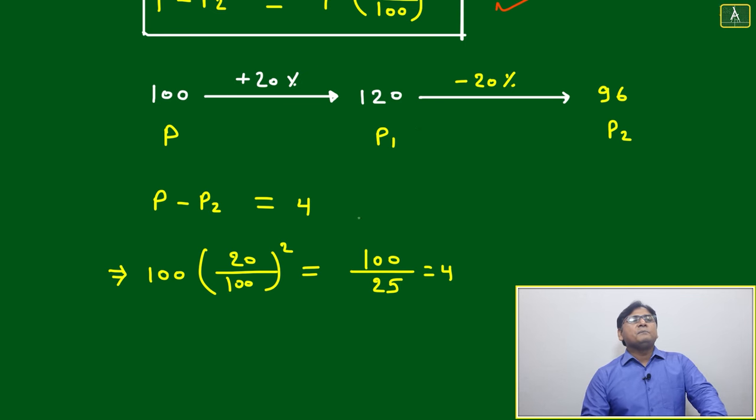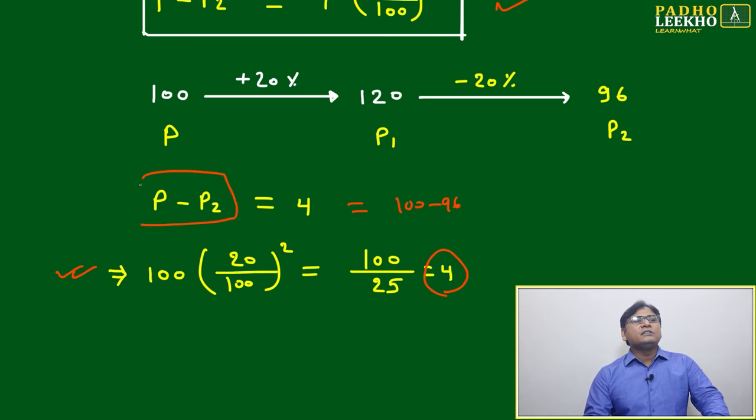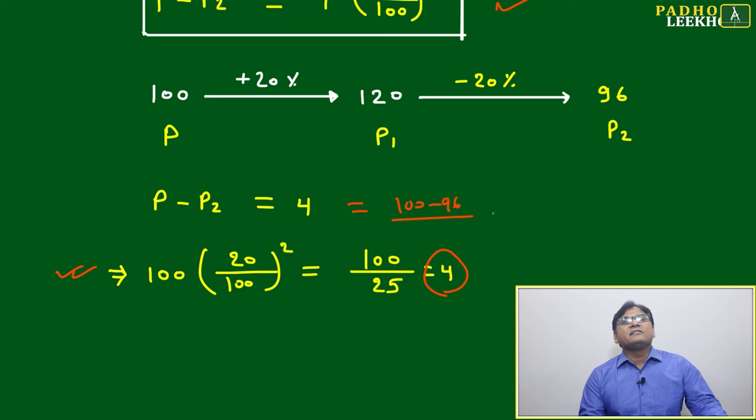P minus P2 will be equal to 4. That is 100 minus 96, then 100 into 20 by 100 divided by this 100 by 24. This is also coming 4. Either you are using this formula or you are using here taking simple example and just making the subtraction. In both of the way, it is same.